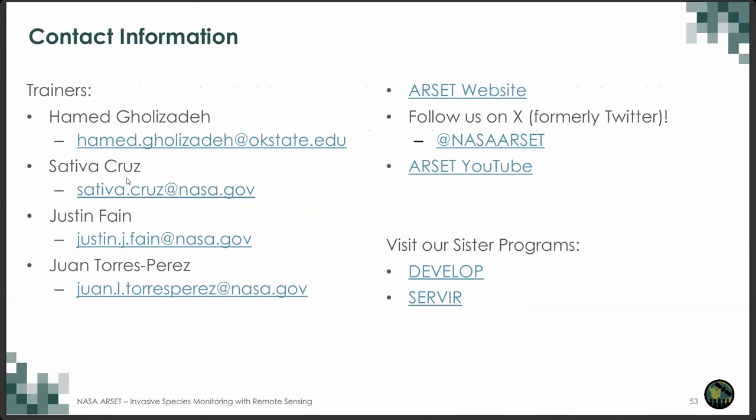Hamed rejoined to answer verbally. Regarding question twenty: how does the team see the future of invasive species mapping with the launch of Landsat Next? Landsat Next will be an improved version of Landsat 8 and 9, with a spatial resolution of 10 to 20 meters and also finer spectral resolution. We expect that at the launch of Landsat Next, we will have more capability to map invasive species — of course, it will depend on the invasive species in question, primarily the difference between the pixel size and the phenomenon being observed on the ground.